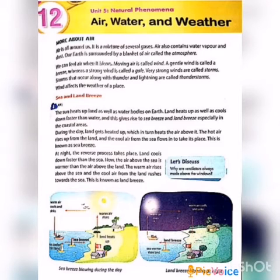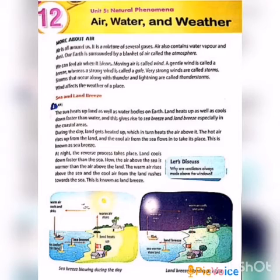Next, sea breeze and land breeze. In coastal areas, the wind blows from the sea to the land during the day — this is called sea breeze. Sea and land breeze occur because of the sun. During the day, the land gets heated up more than the water in the sea. The air above the land is warmer and rises up. Cool air from above the sea blows in to take its place. Thus, the sea breeze blows during the day.